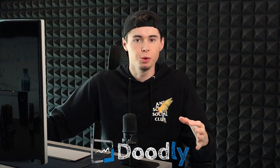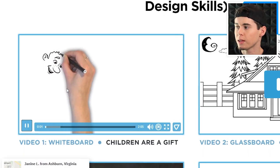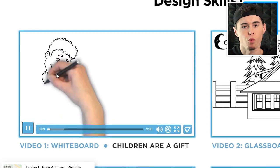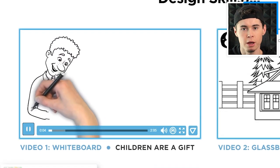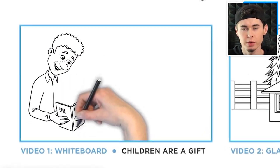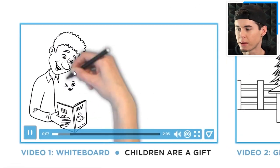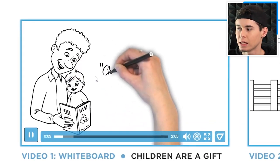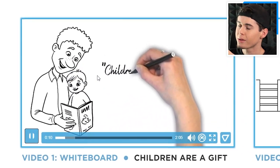One of which is Doodly. Doodly is specifically designed for whiteboard animation — whereas Vyond does both, Doodly is just whiteboard animation. It looks absolutely fantastic. If you want to start a great whiteboard animation channel, this is for you. All of this works exactly the same as Vyond.